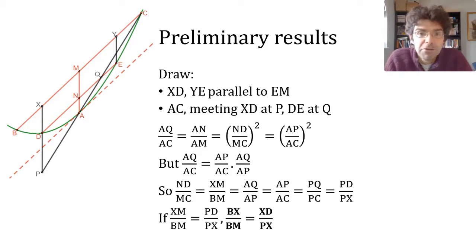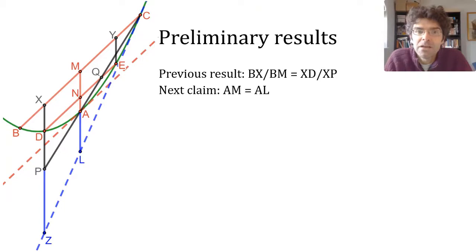And next, we're going to derive a similar result for where the parabola cuts vertical lines that run all the way to the tangent at C. The first point here is that AM is equal to AL.